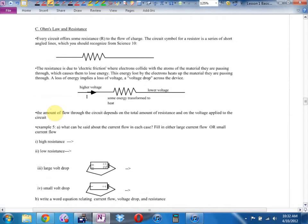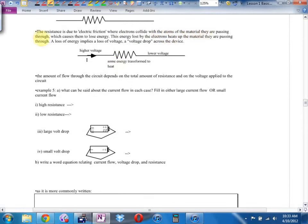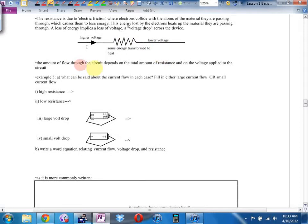C. Ohm's law and resistance. Every circuit offers some resistance to the flow of charge. The circuit symbol for a resistor is a series of short angled lines, which you should recognize from Science 10. I think you do this in Science 9 now. If not, that's the symbol for resistor. The resistance is due to electric friction, where electrons collide with the atoms of the material they are passing through. This causes them to lose energy. This energy lost by the electrons heats up the material they're passing through. Loss of energy implies a loss of voltage, a voltage drop across the device.